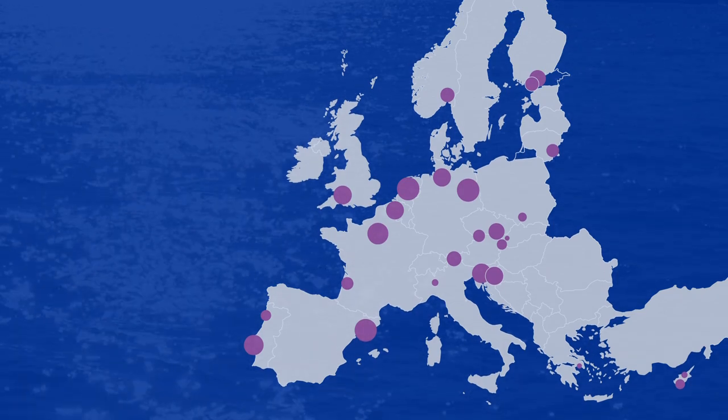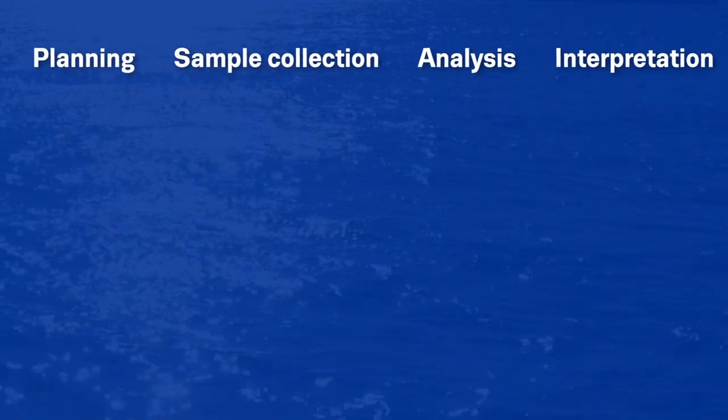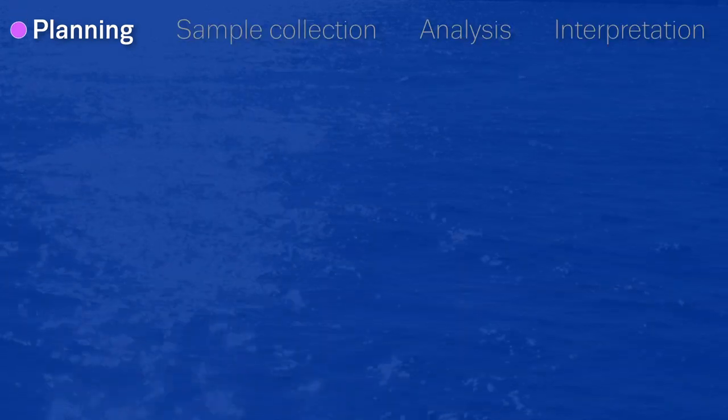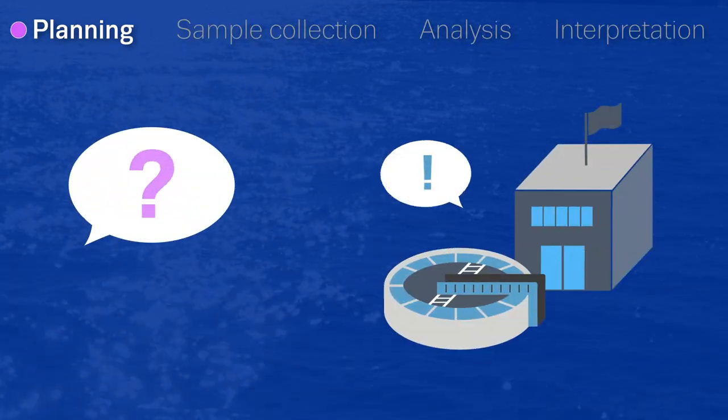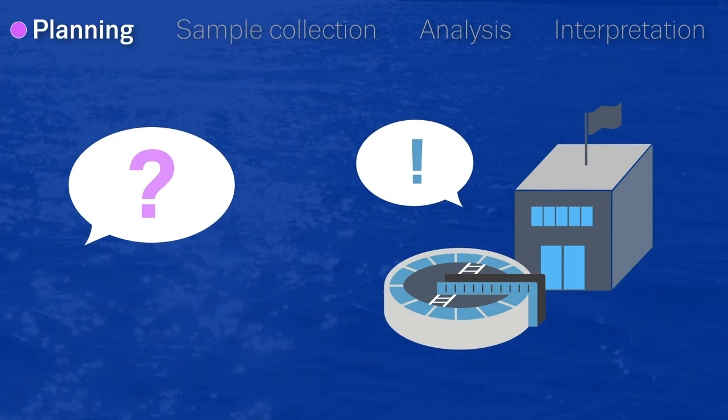To set up wastewater-based epidemiology, there are four key steps to follow. The first step is to make contact with the national institution responsible for drug monitoring and the local authorities taking care of sewage treatment.